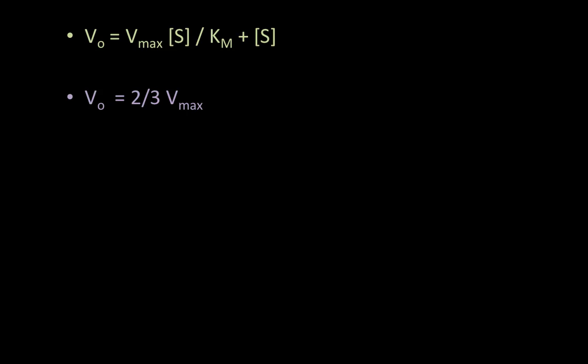And from the question, you know that the initial velocity is two-thirds of Vmax. They gave you that in the question. So if you did not write the question, I'm assuming you're regretting it now. So pause, rewind, and get the question. Write it down and then come back here.